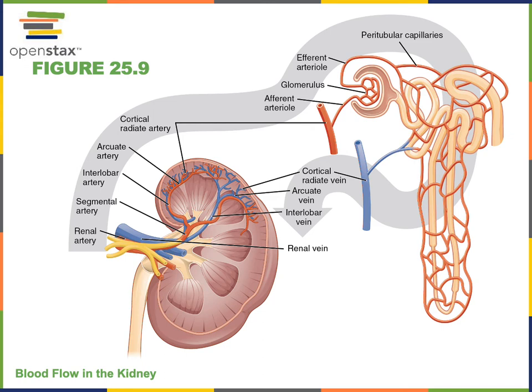Blood flows into the kidneys through the renal arteries that branch off from the abdominal aorta. Then the renal arteries will branch into segmental arteries, and then the segmental arteries branch further to form interlobar arteries. Each interlobar artery carries blood into a lobe of the kidney, and each interlobar artery travels in the renal columns in between the renal pyramids.